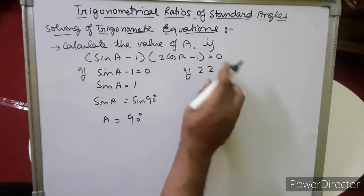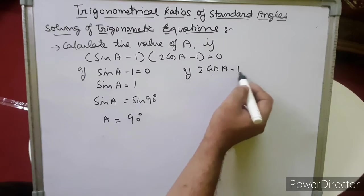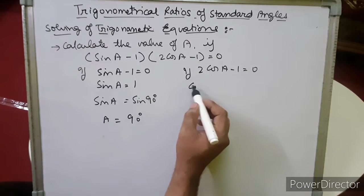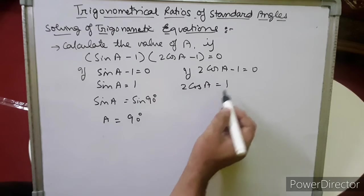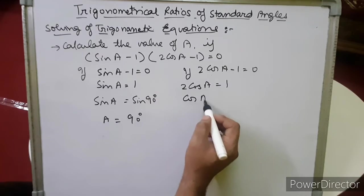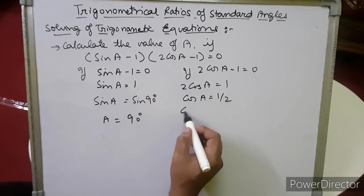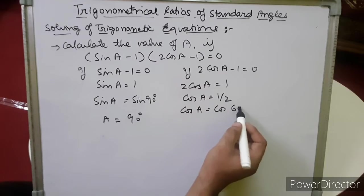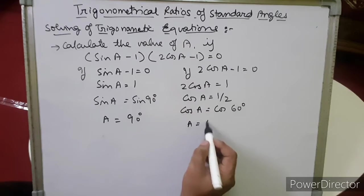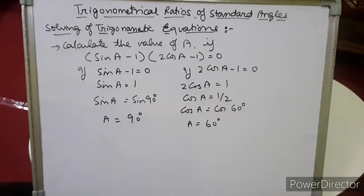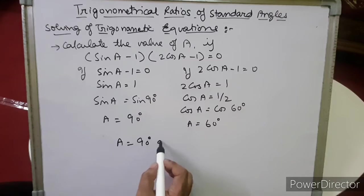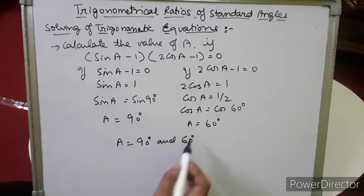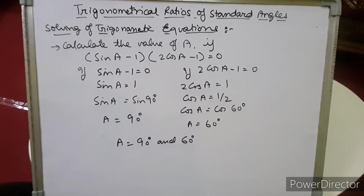If we assume 2cos a − 1 = 0, then 2cos a = 1, so cos a = 1/2. In cos, the value 1/2 corresponds to cos 60°, so a = 60°. Therefore a holds two values: 90° and 60°. Both values satisfy this equation.